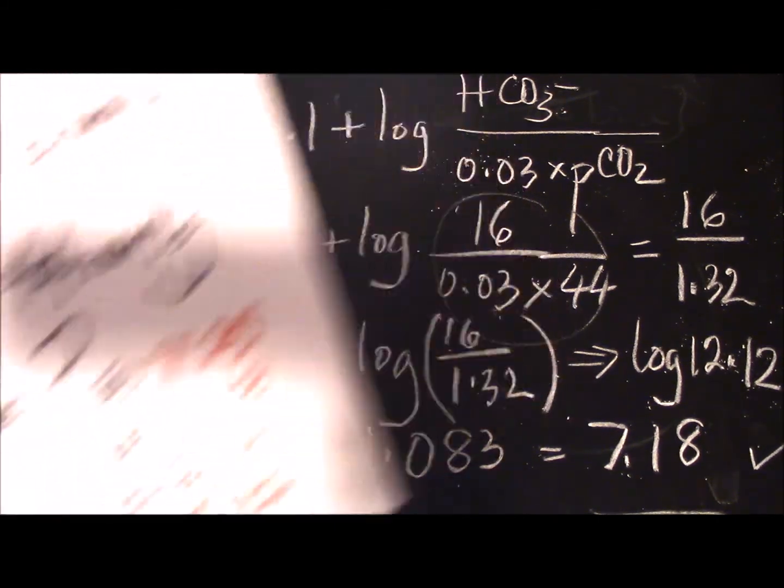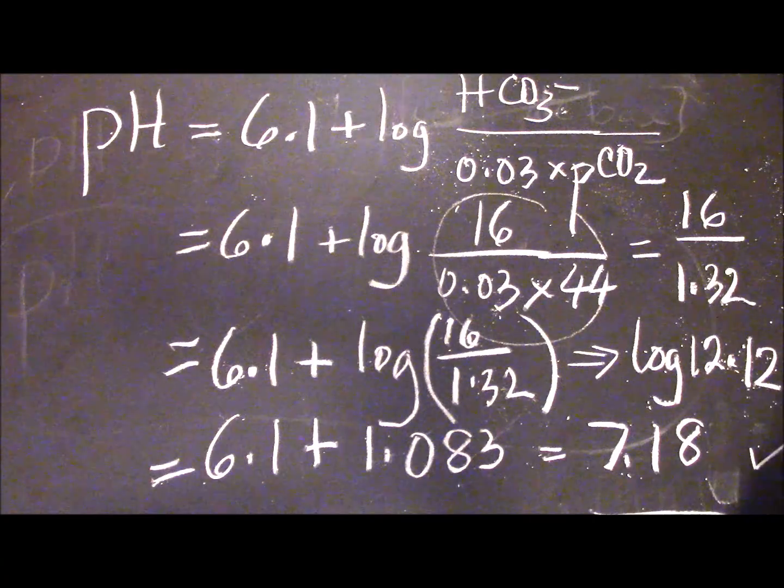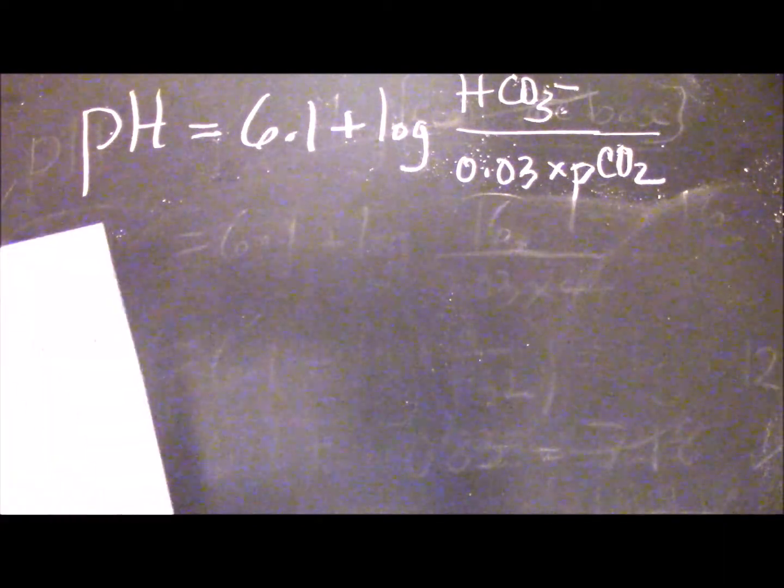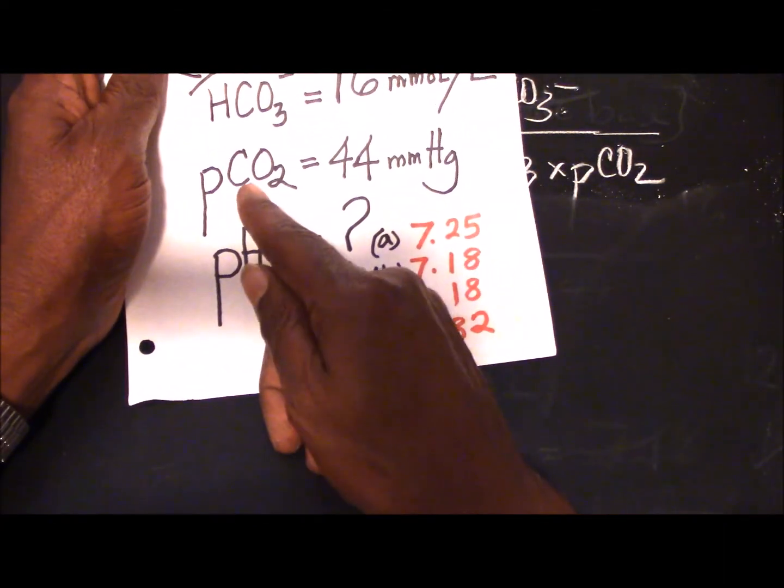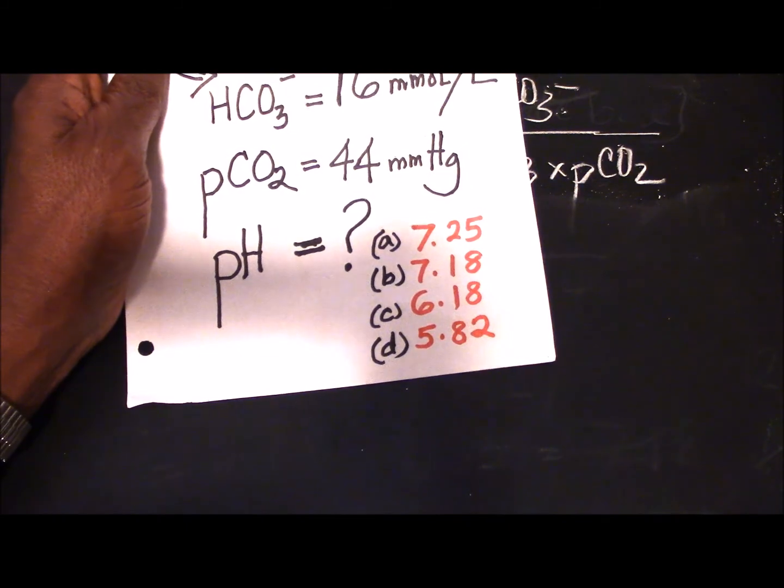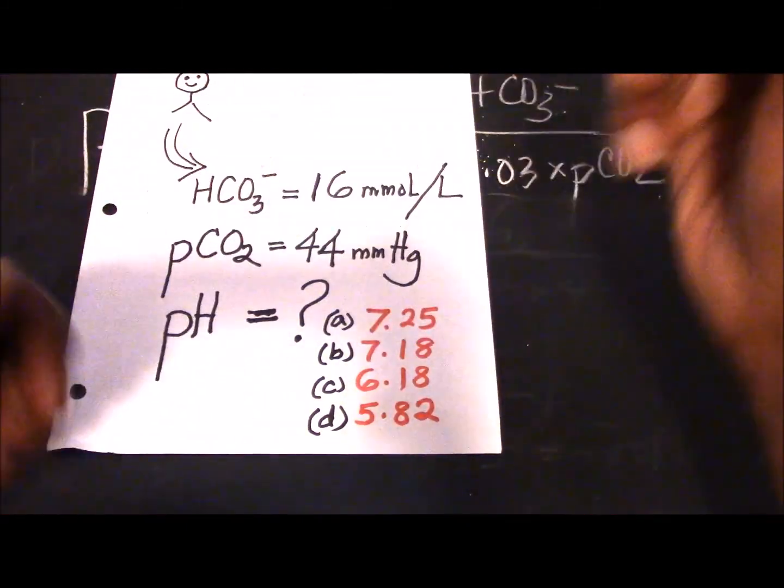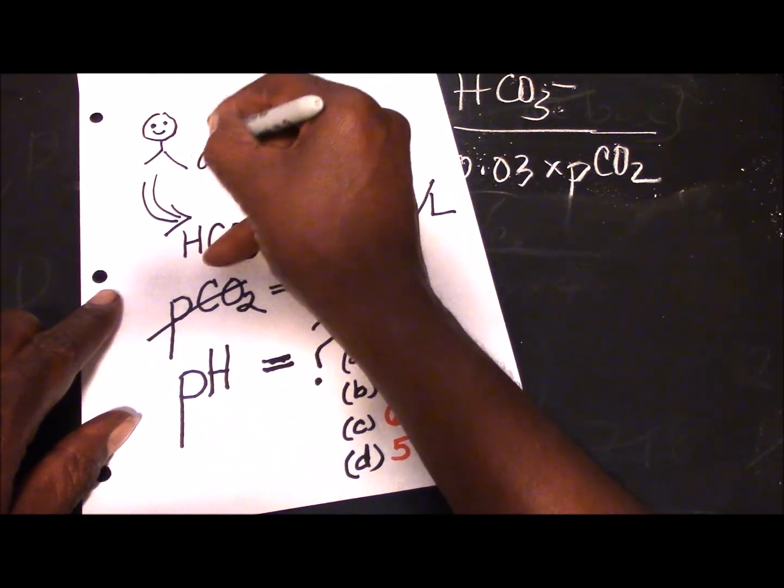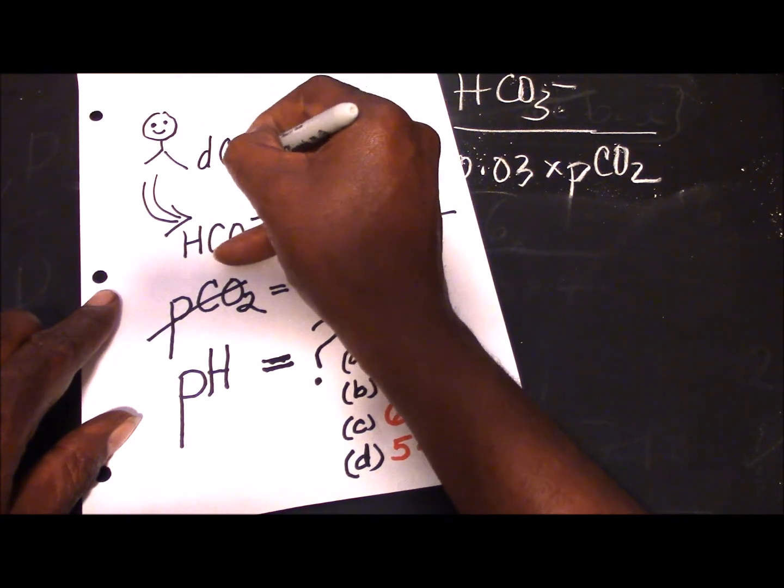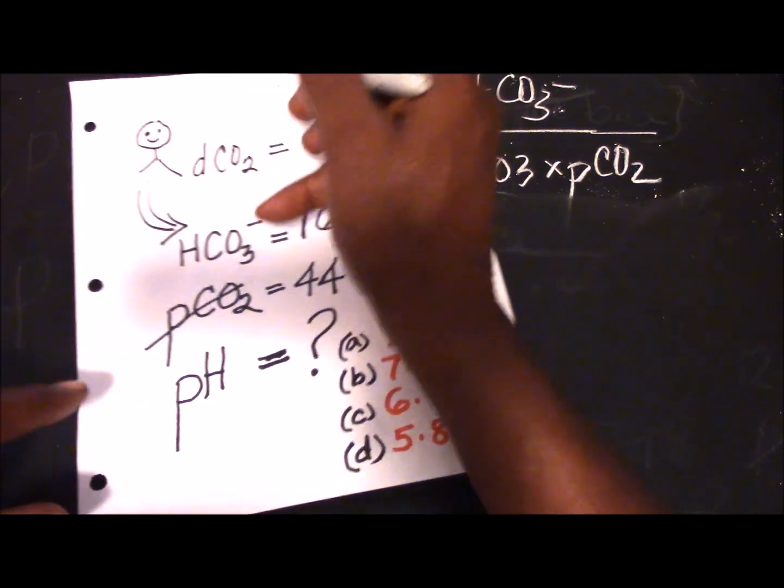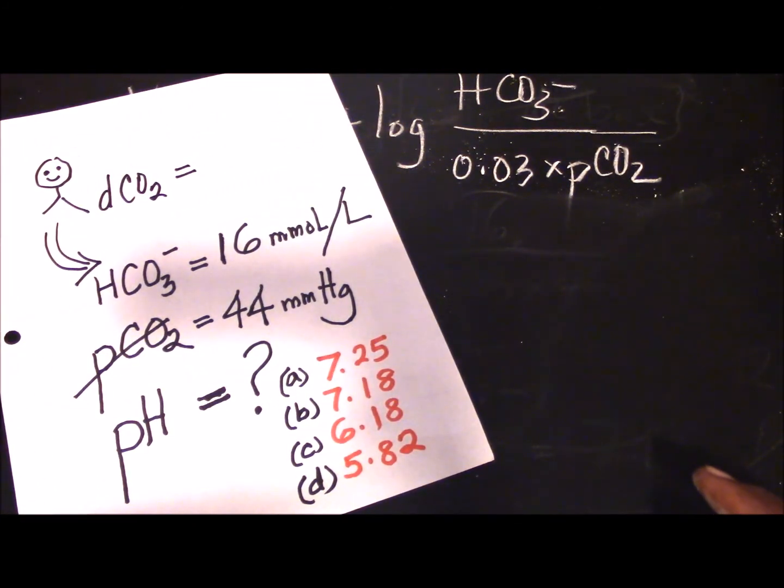To make it a little more complicated, the exam could ask you - here is the formula - it will not give you this one directly. It could give you this other value here. Instead of giving you the PCO2, it could give you the DCO2, dissolved carbon dioxide. What if it says that the DCO2, rather than the PCO2, is the information provided to you in the exam?